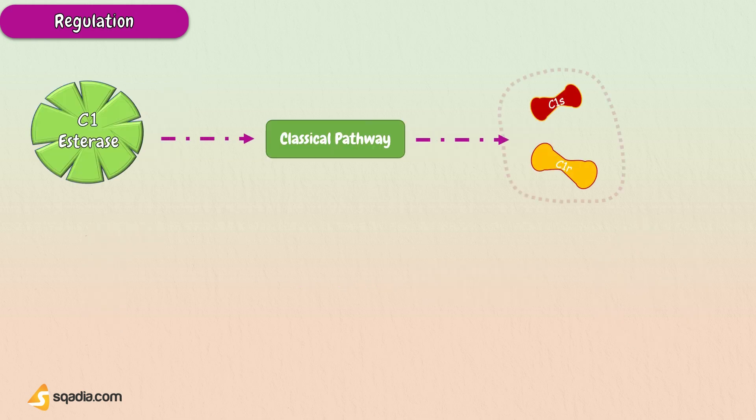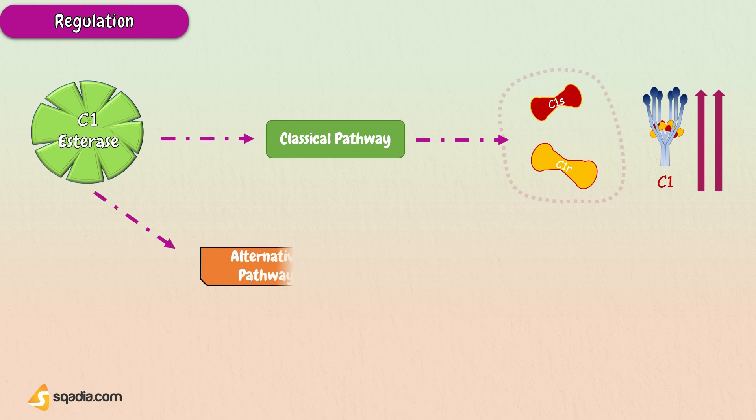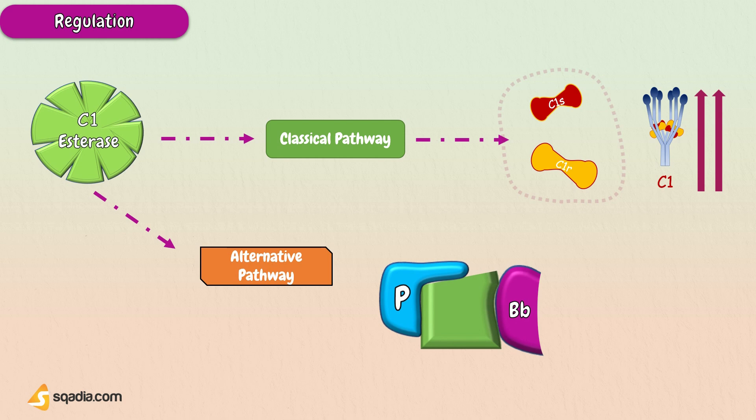C1 esterase inhibitor is also part of the classical pathway. It inactivates the C1R and C1S proteases. It can be overwhelmed if the concentration of C1 increases and becomes abundant in the bloodstream to the point that C1 esterase cannot control it. In the alternative pathway, the C1 inhibitor dissociates Factor B B from C3B, thus C3 convertase shuts down.